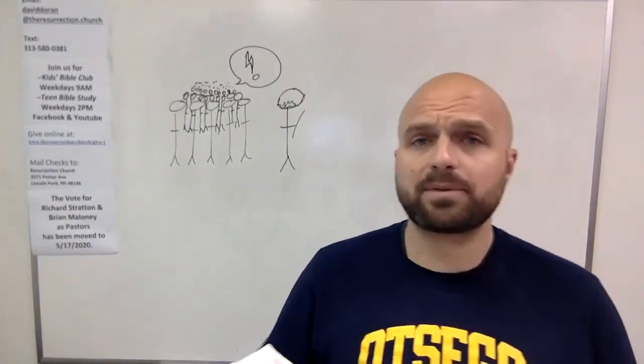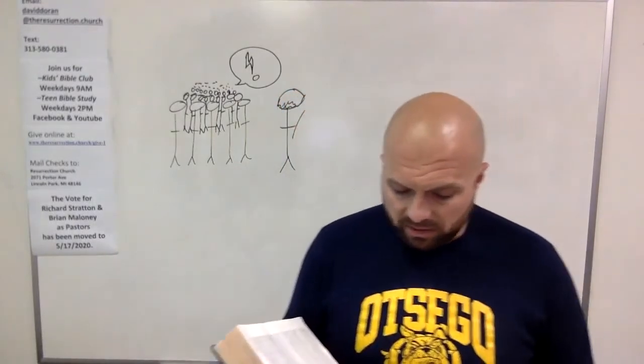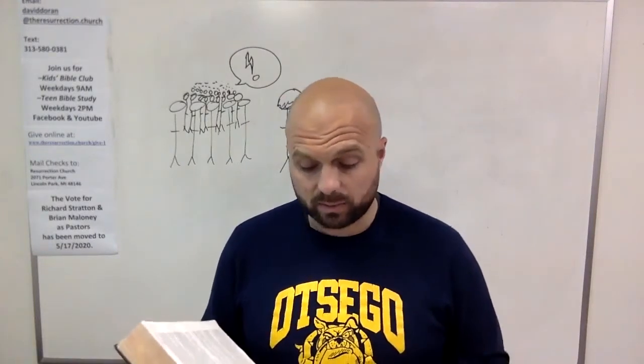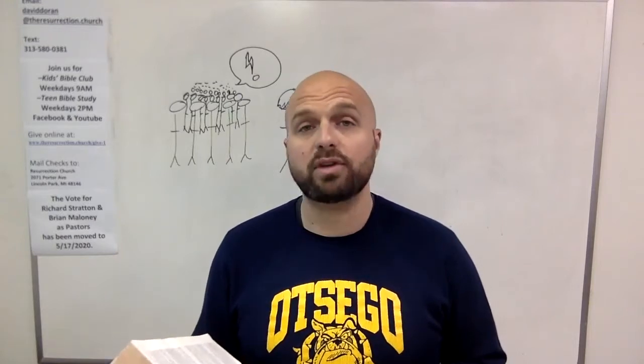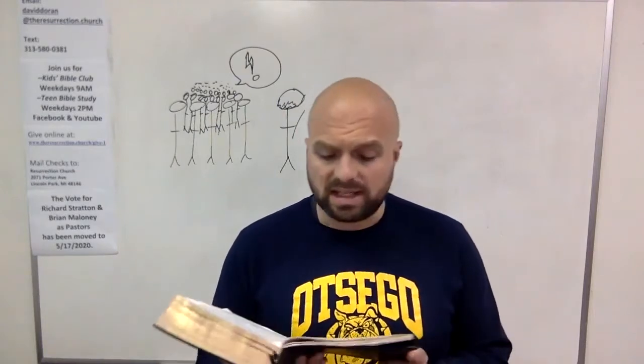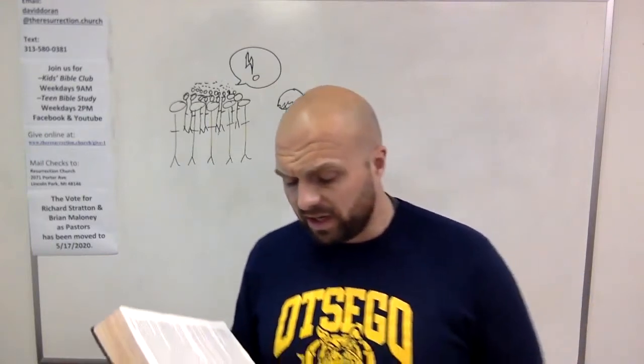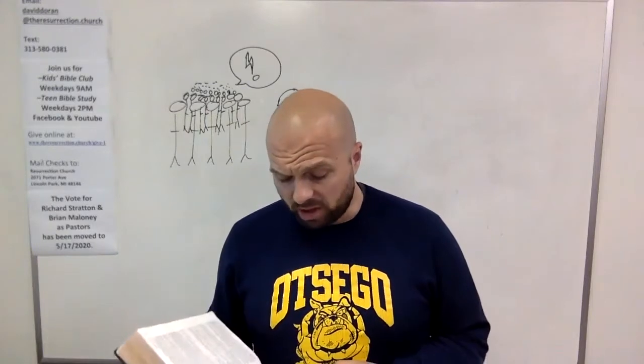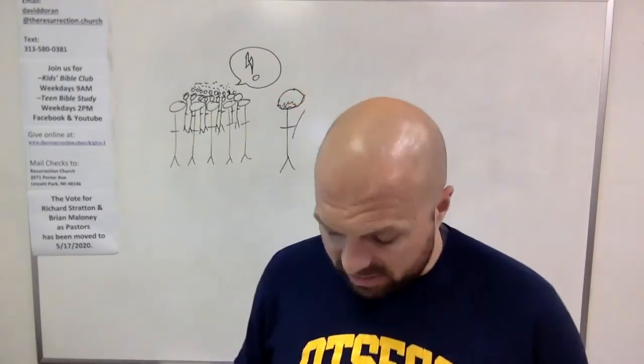Well, here's what chapter 16 tells us. The whole Israelite community began to walk from Elam and came to the desert of Sin, is what the name of the desert is called. And in the desert the whole community grumbled against Moses and Aaron. The Israelites said to them, if only we had died by the Lord's hand in Egypt. There we sat around pots of meat and ate all the food we wanted. But you have brought us out into this desert to starve this entire assembly to death.